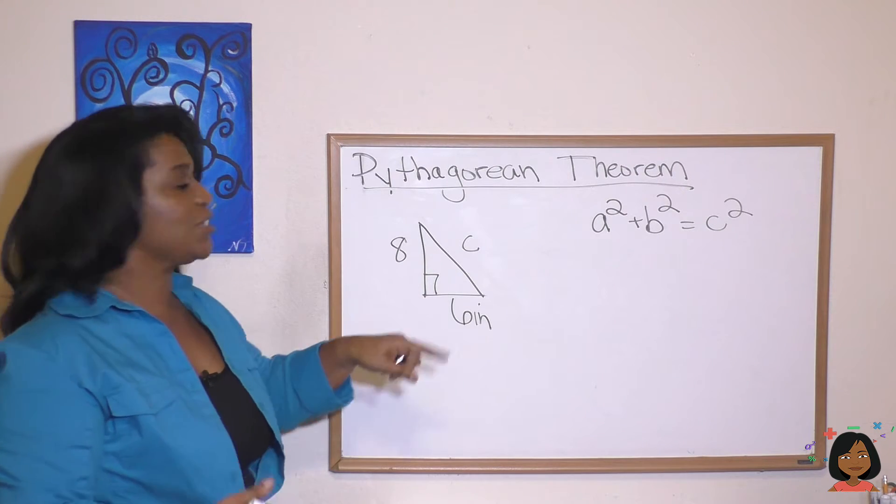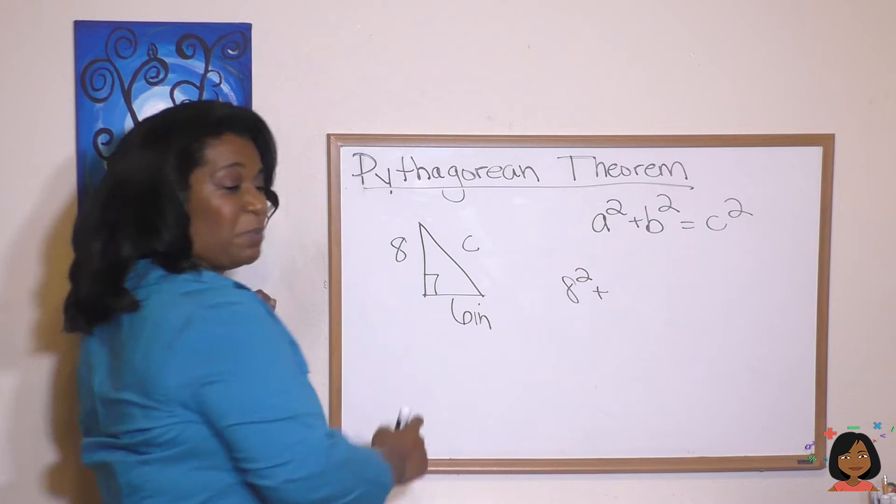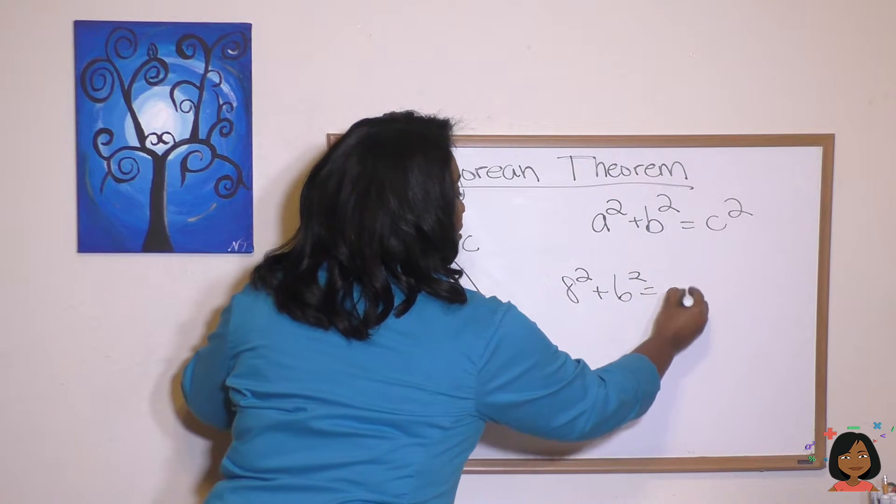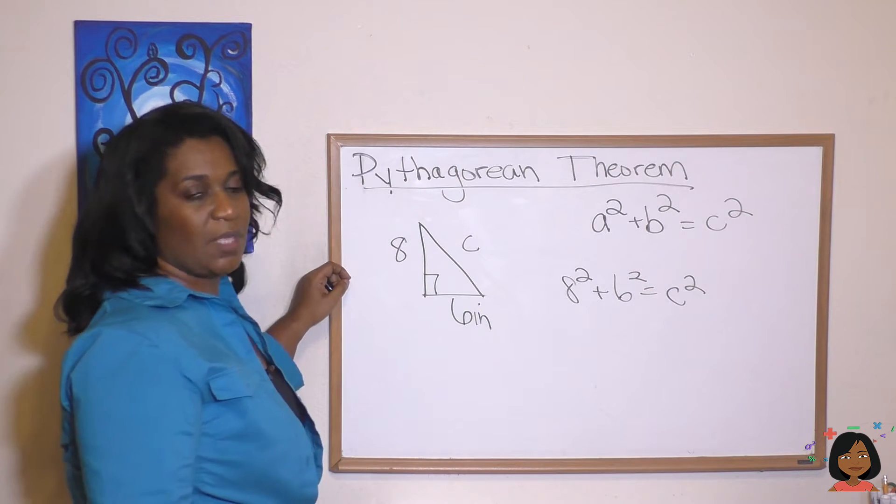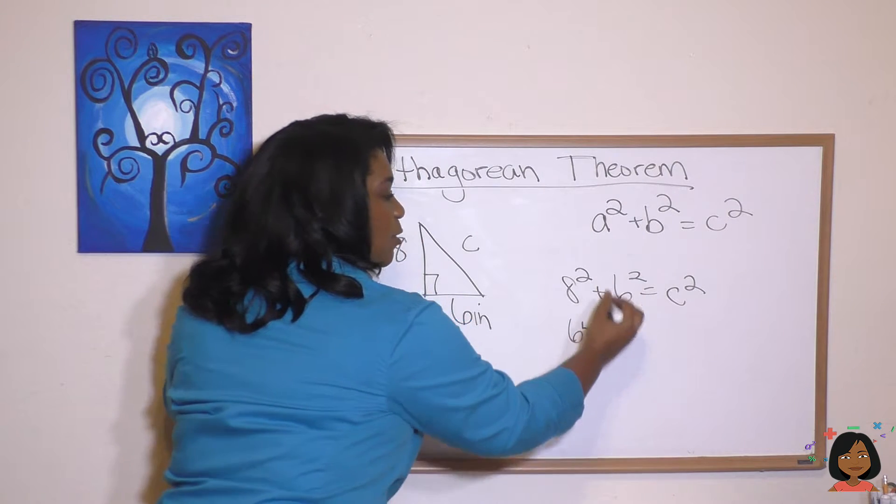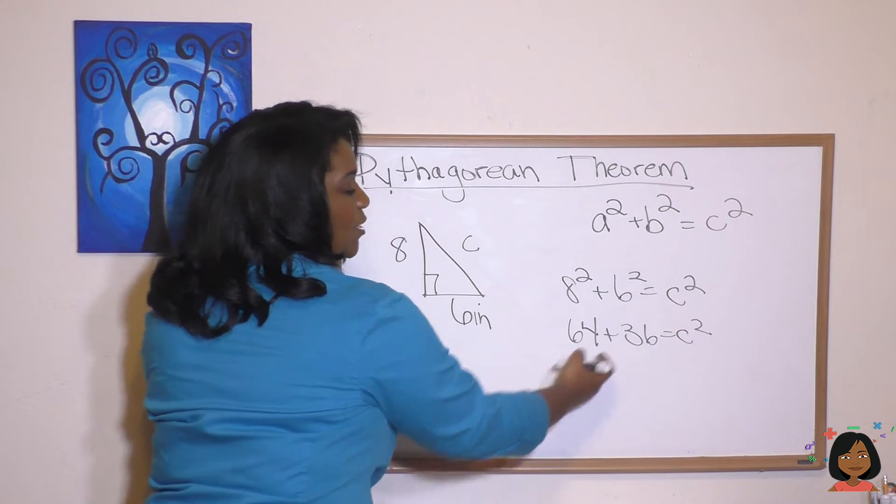So let's plug it into our formula. a squared, let's do 8 squared, plus b squared, 6 squared, equals c squared. Let's do the math. 8 times 8 is 64. 6 times 6 is 36. And let's add those two together.